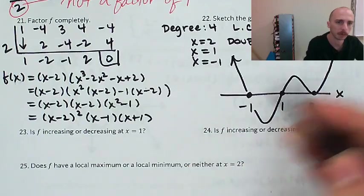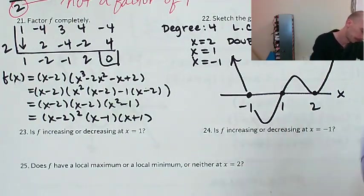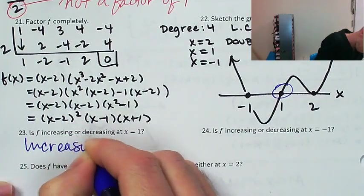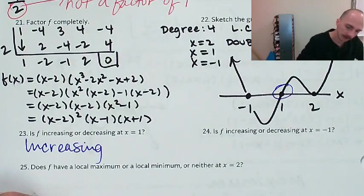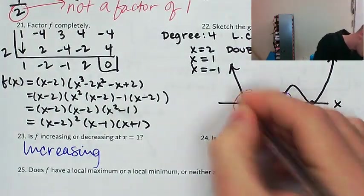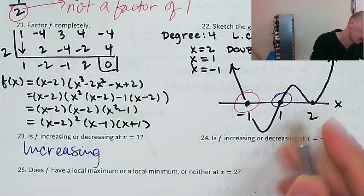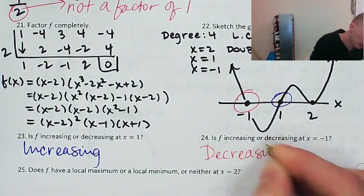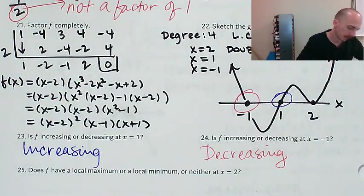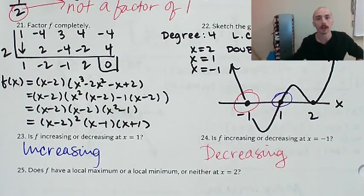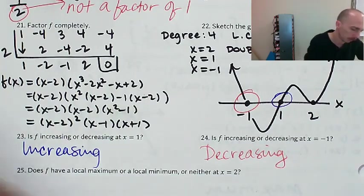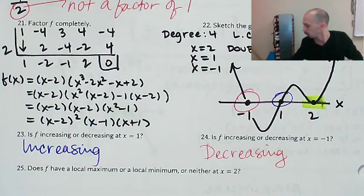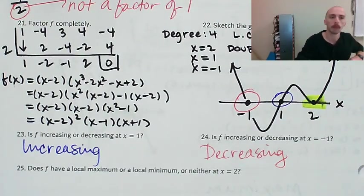Is f increasing or decreasing at x equals 1? It's increasing right there. Is f increasing or decreasing at x equals negative 1? It's decreasing — going from positive to negative as we move left to right. And is there a local maximum, local minimum, or neither at x equals 2? Looking right there at x equals 2, it's at the bottom of its curve, so that's a local minimum.